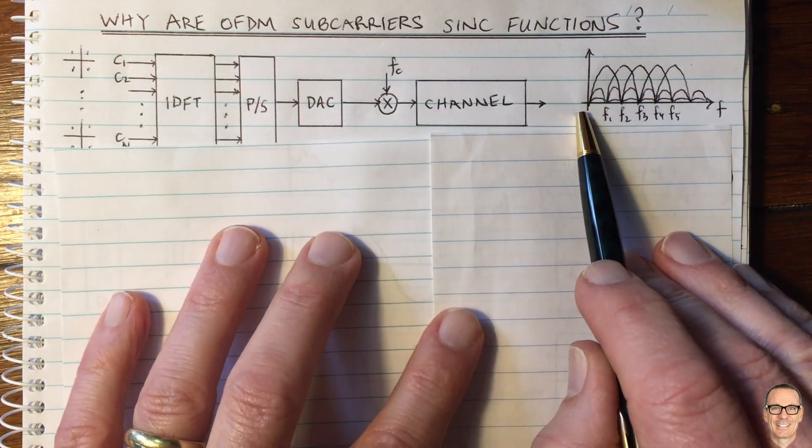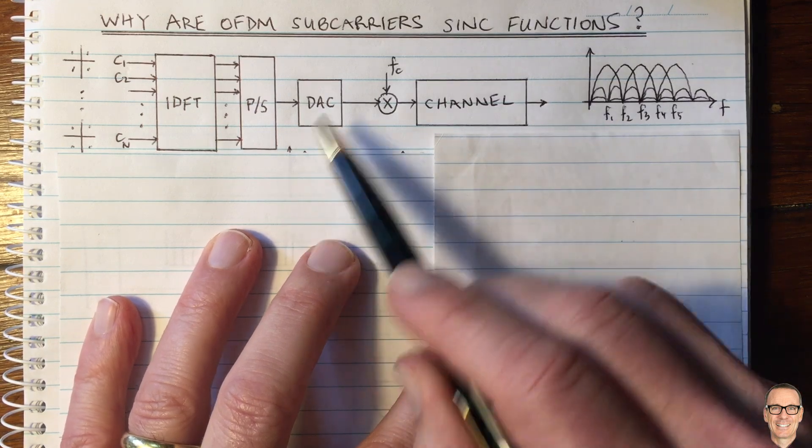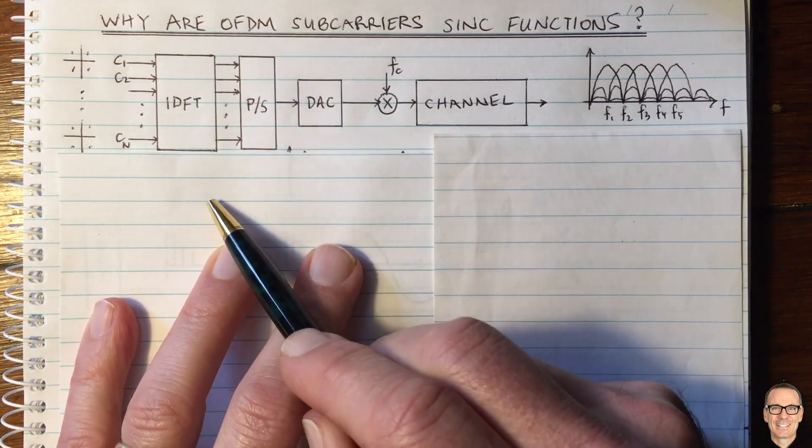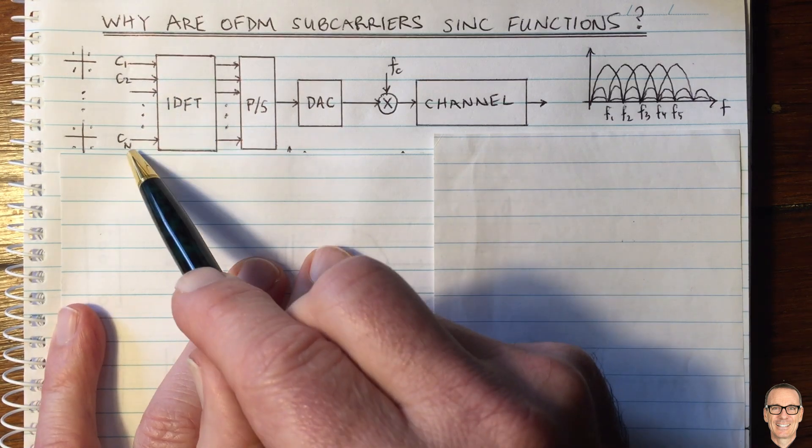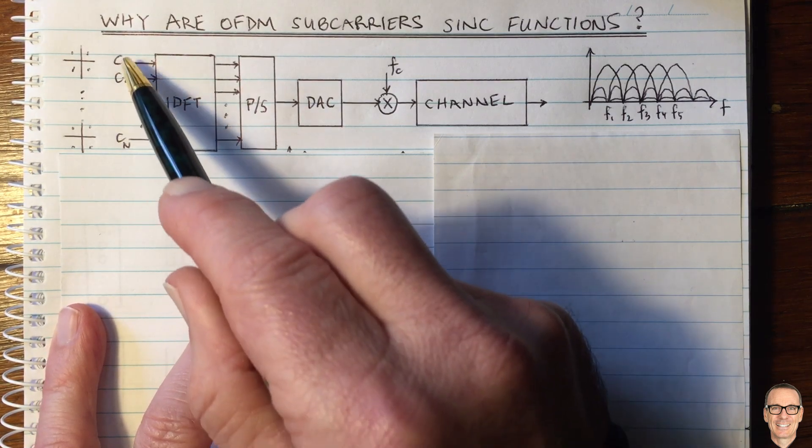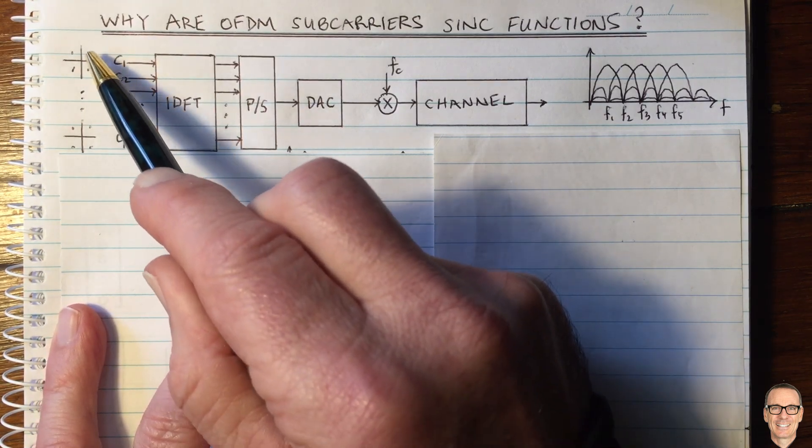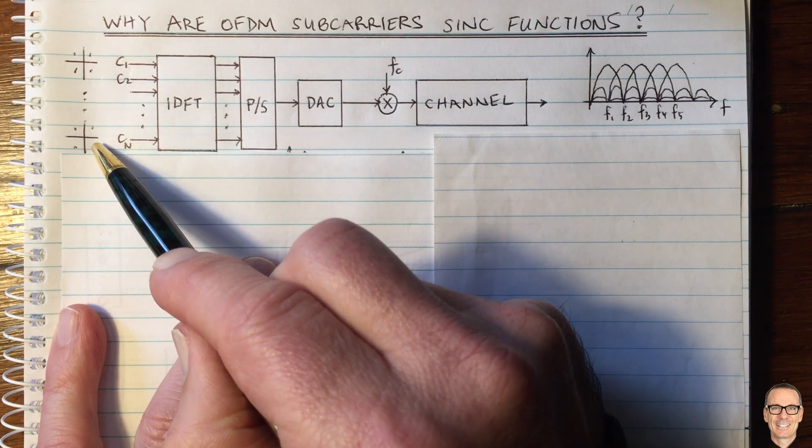Well, let's think about the processing in the transmitter of an OFDM system. It starts with taking complex numbers, n complex numbers, and each of these complex numbers comes from a constellation. They represent the data.